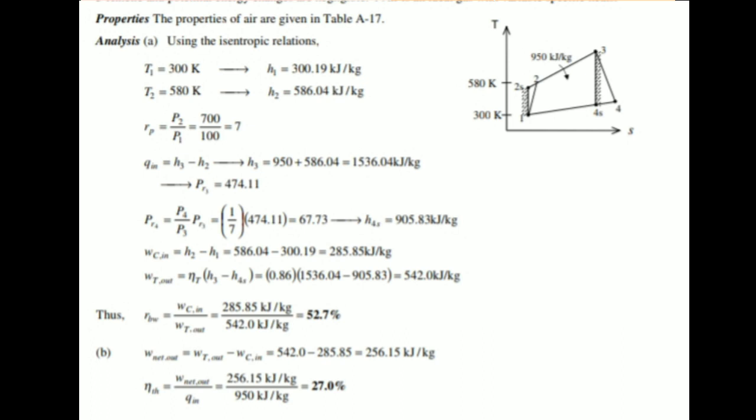Thus, W in over W out is equal to 285.85 over 542.0, which equals 52.7%. And we have 256.15 over 950, which equals 27.0% for the thermal efficiency.